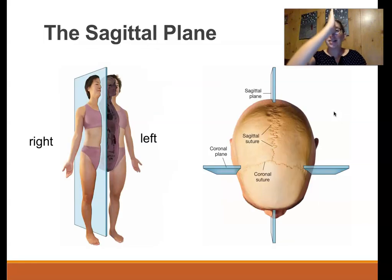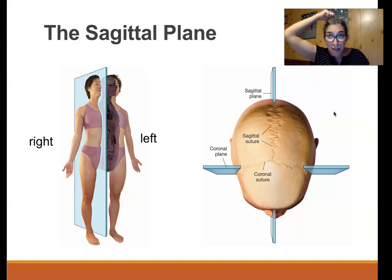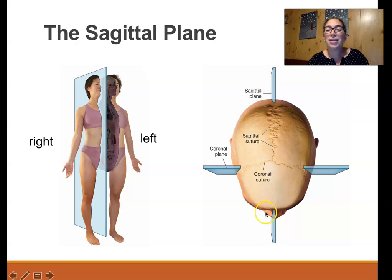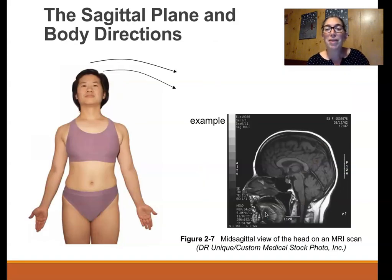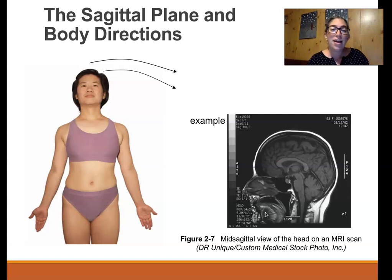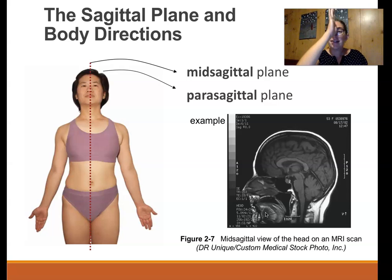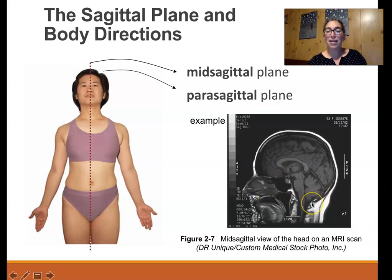The sagittal plane is like a big blade cutting you straight down through your nose. It's also named after a cranial suture that goes front to back on the skull — the sagittal suture. The sagittal plane divides the body into right and left halves. When doing a CT scan looking for, say, a brain tumor, if the scan section is right down the center, that would be a mid-sagittal section or mid-sagittal plane. This image here looks exactly like a mid-sagittal section right in the center.